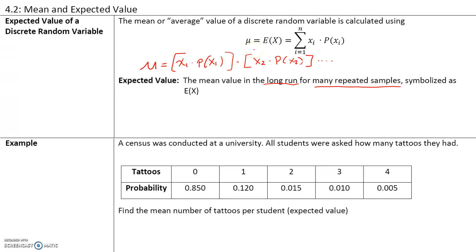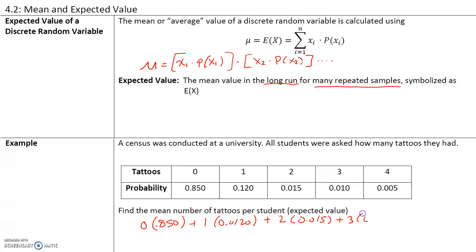The mean value of a discrete random variable is given by the numerical value times its probability: 0 times 0.850, plus 1 times 0.120, plus 2 times 0.015, plus 3 times 0.010, plus 4 times 0.005. If you add all these up, you get 0.2.